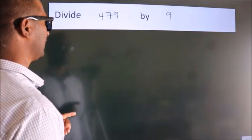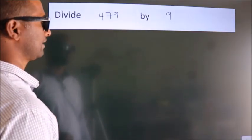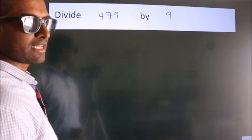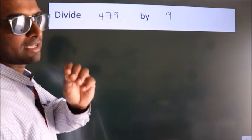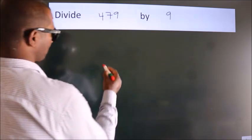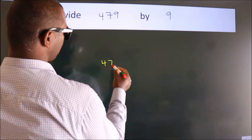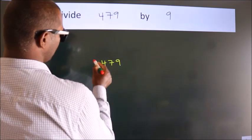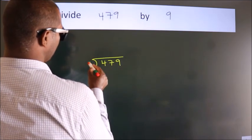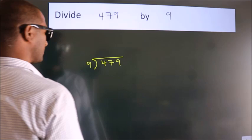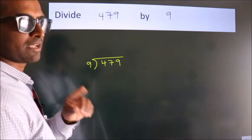Divide 479 by 9. To do this division, we should frame it in this way. 479 here, 9 here. This is your step 1.